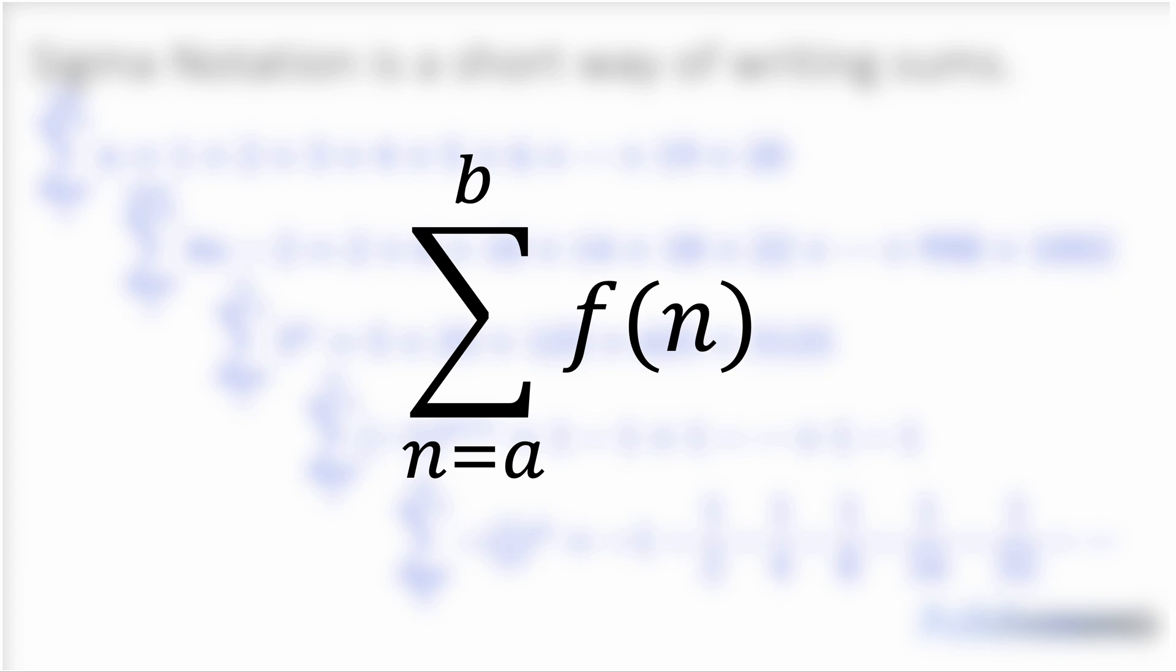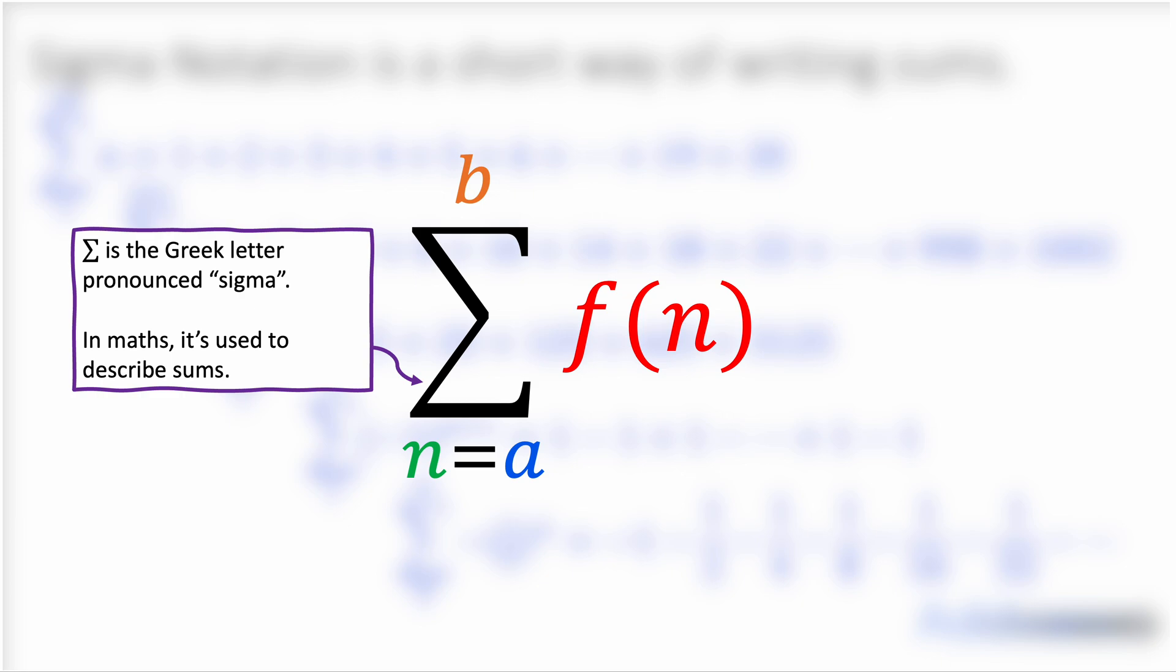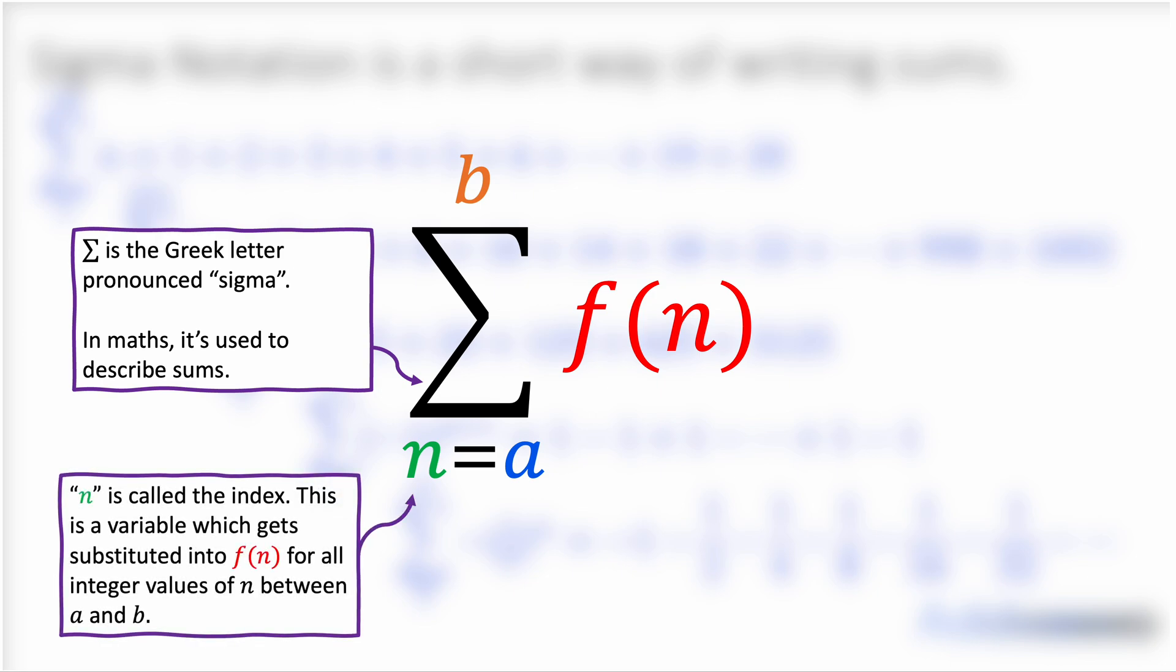So here we have sigma notation and we can look at the different parts. First we have the Greek letter sigma and this is just what mathematicians use to talk about sums. The number n at the bottom is called the index and this is the variable that gets substituted into f of n.